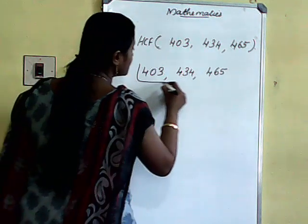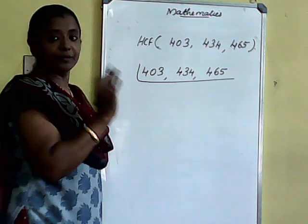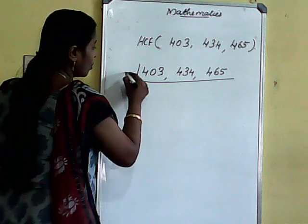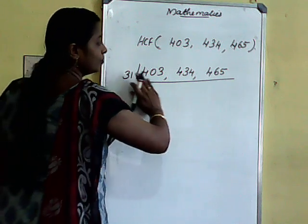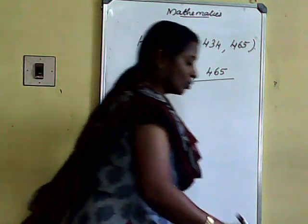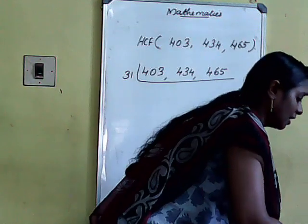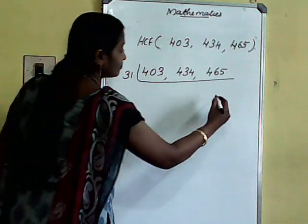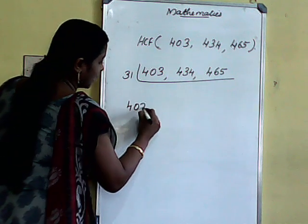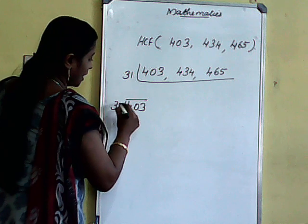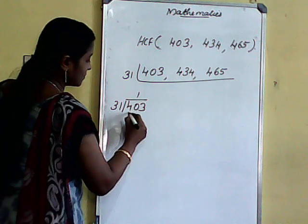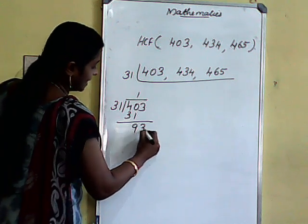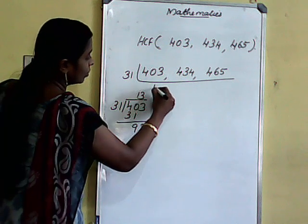These numbers have 31 as a common factor. 31 is common in all 3 numbers. 403 divided by 31: how many times? 1 times 31 is 31, 3 times is 93 — so 13 times.